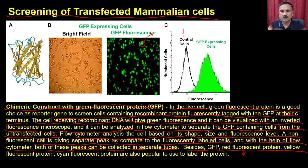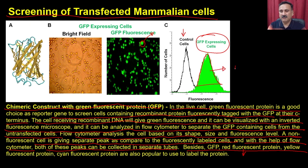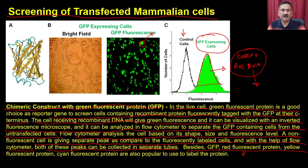These GFP-positive cells can be collected in a separate tube. Besides GFP, other proteins like RFP, YFP, and CFP can also be used. You transfect the cells, observe green fluorescence under the inverted microscope, then use the flow cytometer to separate molecules based on fluorescence, collecting the recombinant DNA-containing cells in a separate tube for subsequent experiments.